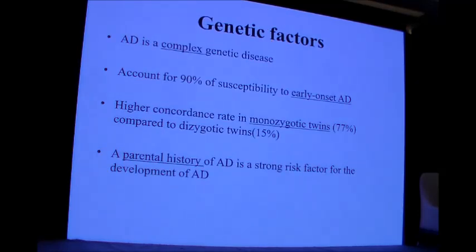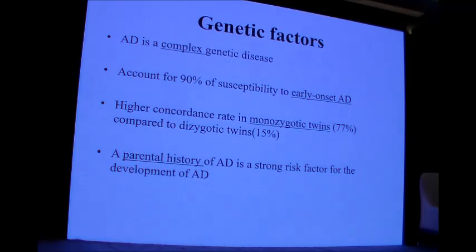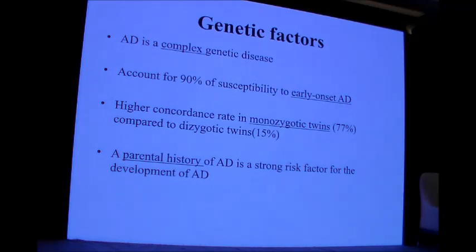As regards genetic factors, atopic dermatitis is considered a complex genetic disease accounting for 90% of susceptibility in cases of early onset atopic dermatitis. There is a high concordance rate in monozygotic twins, up to 77%, and the presence of a parental history of atopic dermatitis is a strong risk factor for its development in the child.